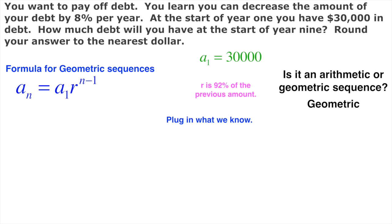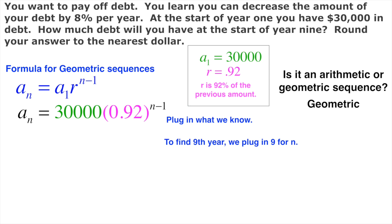So now let's fill that in. We've got $30,000 for our first term, r is 0.92. Now it asks us how much will we have at the start of year 9. So now what I can do is plug in 9 for n.